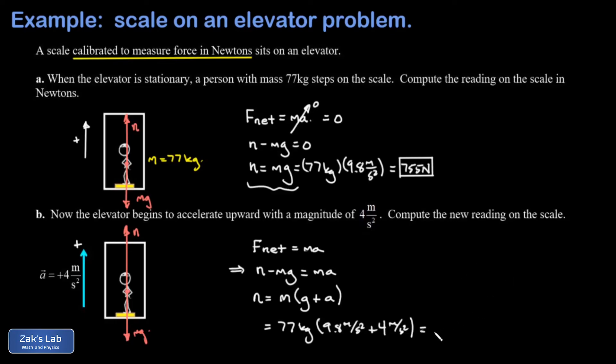And when I run the numbers on this I get 1060 newtons, and this is going to give us the reading on the scale. We could say the person's apparent weight has increased here. In other words, the person actually feels heavier; the scale is pushing up on their feet harder.